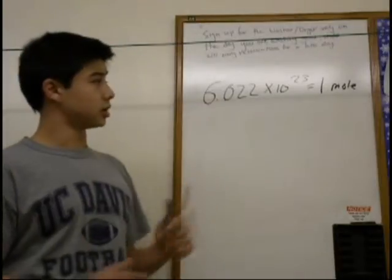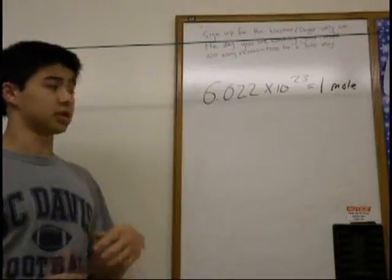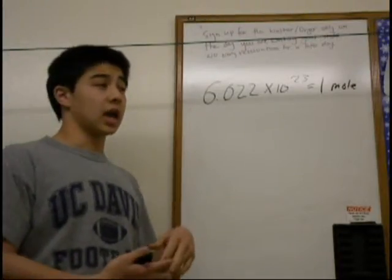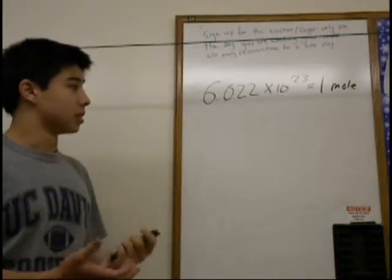And the reason the number is so large is because it's used in chemistry for determining the number of atoms and molecules. So there's a large amount of it, so we need a very large number to use.